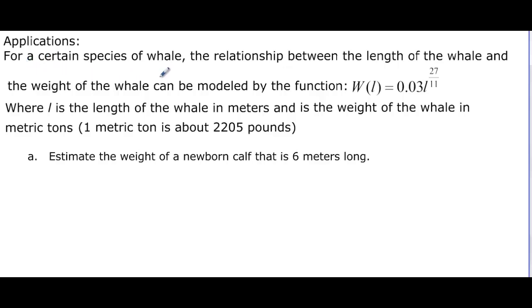For a certain species of whale, the relationship between the length of the whale and the weight of the whale can be modeled by this function given here, where l is the length of the whale in meters and its weight of the whale in metric tons. So estimate the weight of a newborn calf that is 6 meters long. Well, that means l is equal to 6. So it's just a plug and chug.